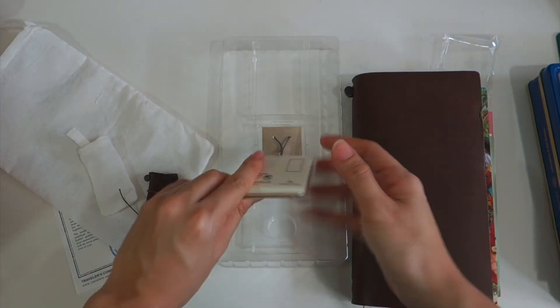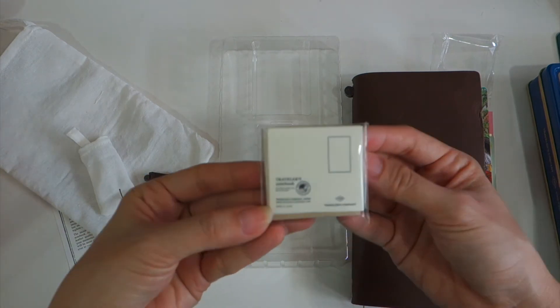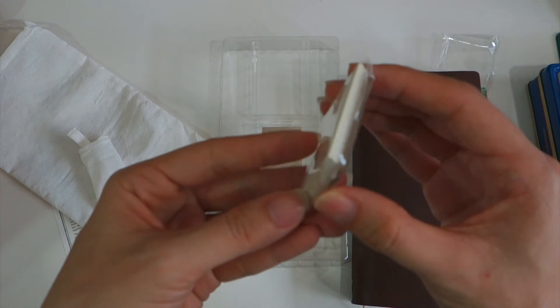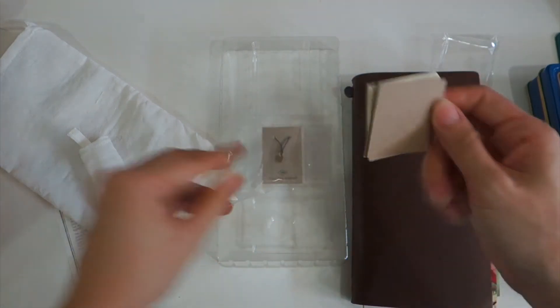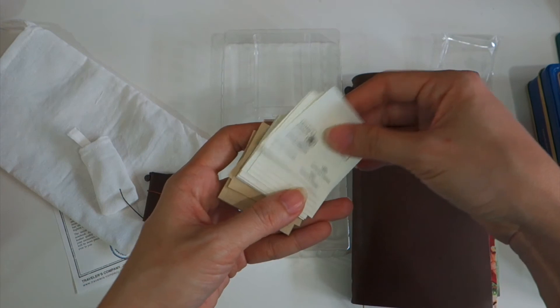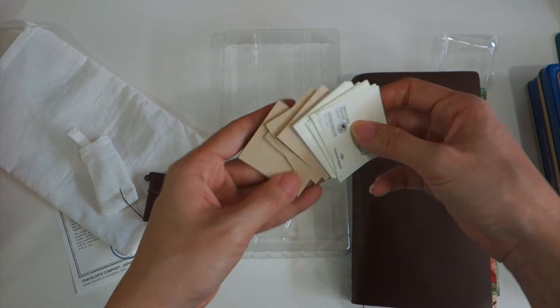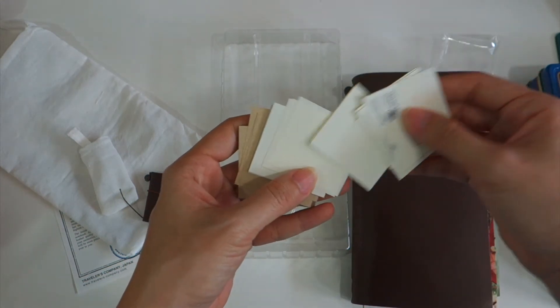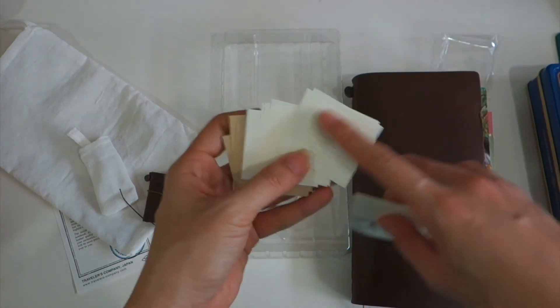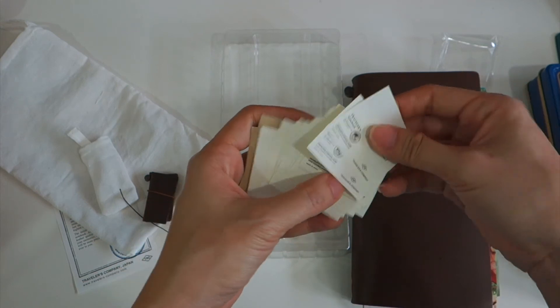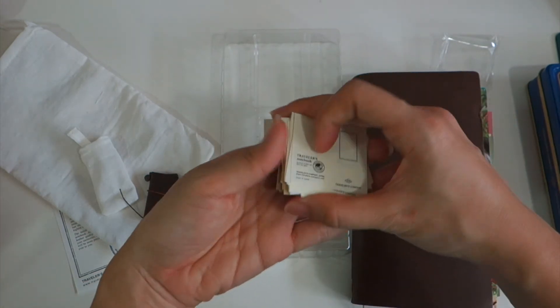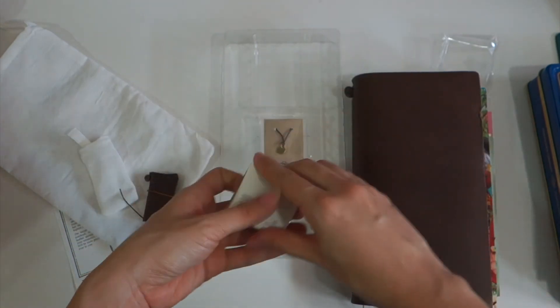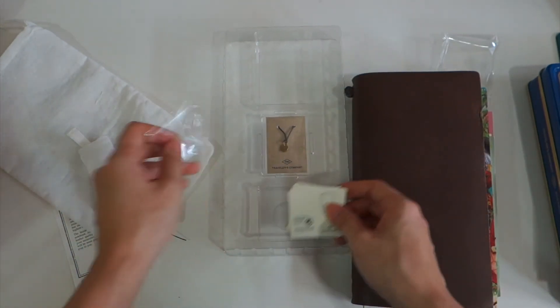And this is the notebook. Let's see what's inside, it's like paper. This is the craft paper and this is the squared, and this is the blank one. And this is exactly how the paper feels. So this is it.